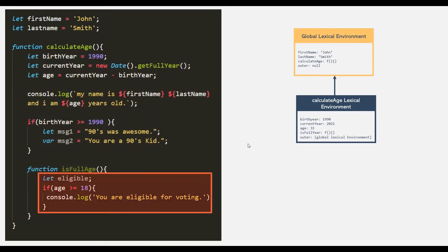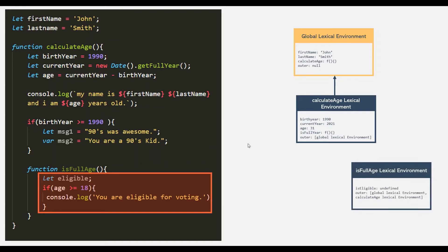Then the isFullAge function will also create its own scope. A lexical environment for isFullAge will be created and will store all variables declared in that scope — in this case, only the eligible variable, set to undefined since no value has been assigned. This isFullAge lexical environment also has an outer variable pointing to the lexical environments of all its parent scopes. The parent scope for isFullAge is the calculateH function, so the outer variable points to the calculateH lexical environment, and also to the global lexical environment.